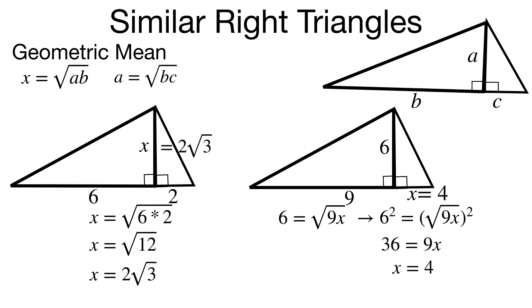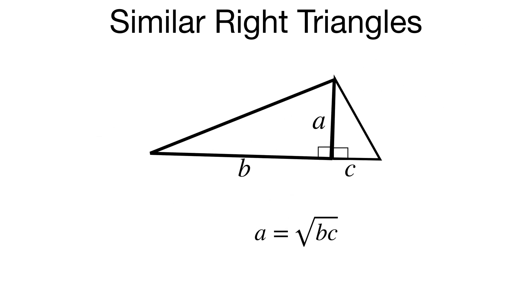These are just two simple examples, but hopefully that's enough to get you going on solving these questions. To find the length of an altitude in similar right triangles, length a of the altitude is the geometric mean of segment lengths b and c, or multiply b and c and take their square root. Thank you for watching, and I hope you find this helpful.